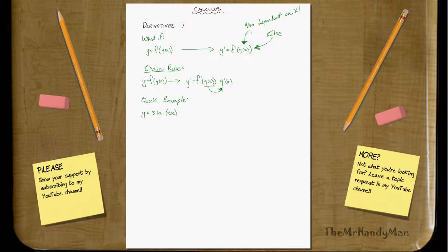y equals sine of 2x. Notice what you were thinking was, y prime would equal cosine of 2x. I don't know if you were actually thinking that, but this is false.